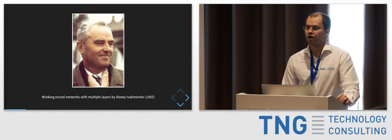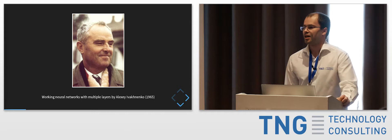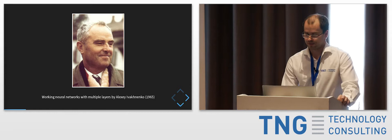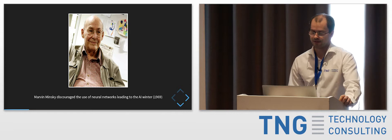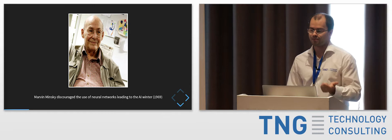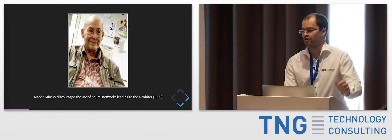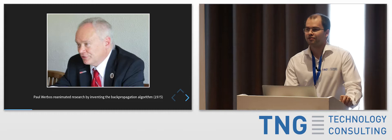The first working neural nets were in 1965 by Ivanenko — he got it working with some layers. But backpropagation was not there at that time, so training was very difficult. That's why Marvin Minsky greatly discouraged the use of neural networks in 1969, and research nearly died for decades. Computational power was not there, training was very expensive, and people thought it not to be powerful, because even the XOR function could not be modeled using a single perceptron.